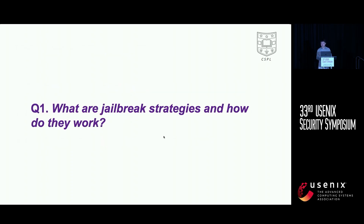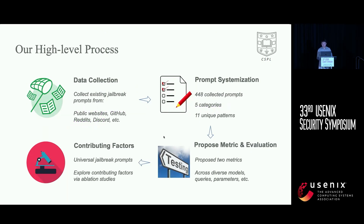Let's take a look at the first research question regarding existing jailbreak methods. Our investigation takes four steps. We first automatically scrape existing jailbreak prompts from the wild and systemize them following a thematic coding process. Then we examine their effectiveness with our proposed quantification metrics. During this process, we discover several jailbreak prompt patterns that are universally effective against different commercial LLMs. To understand what makes them so powerful, we conduct ablation studies to examine their key contributing components.